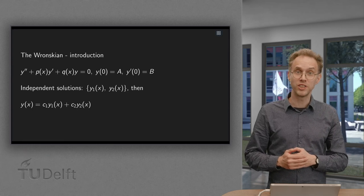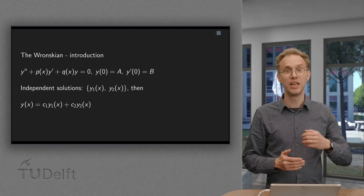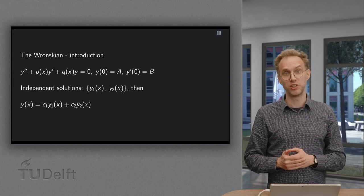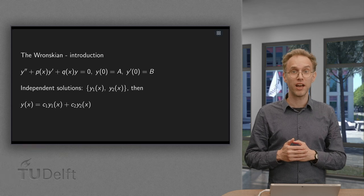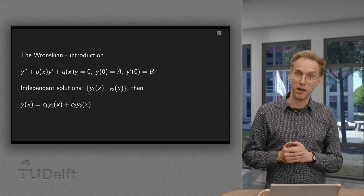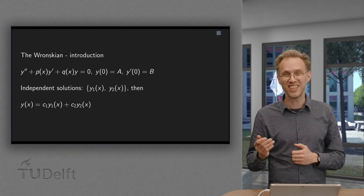If we solve a homogeneous second-order equation, we need two independent solutions. We know the notion of linear independence from linear algebra, and for functions we have the same idea. But how do we see this?